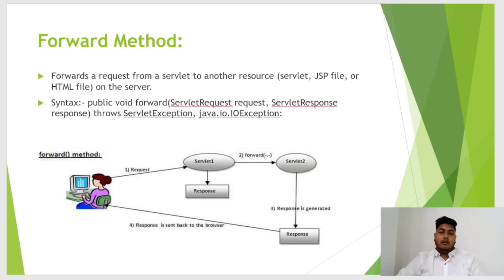Let's begin with the forward method. It forwards the request from a servlet to another resource — another resource can be a servlet, JSP file, or HTML file on the server. Its syntax accepts two parameters: ServletRequest request and ServletResponse response, and throws ServletException. As shown in the figure, the user sends a request to Server 1, Server 1 forwards the request to Server 2, and Server 2 sends the response back to the user.